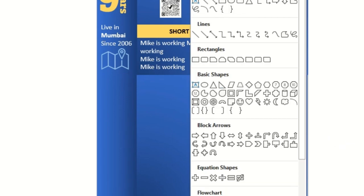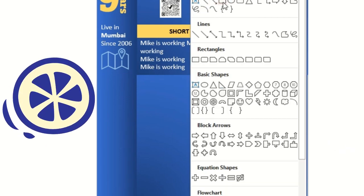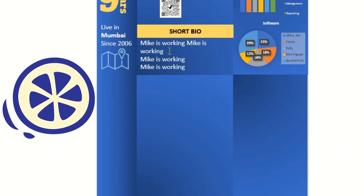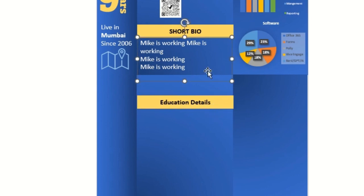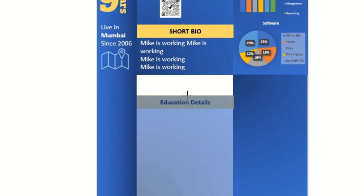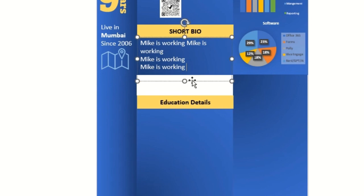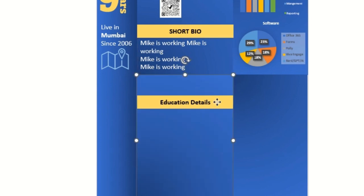There's a gap now that you can see — you need to fill it with your education details. If your short bio description is getting longer, make sure this table adjusts accordingly. For now I'll keep it as is.